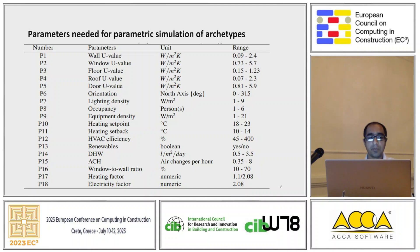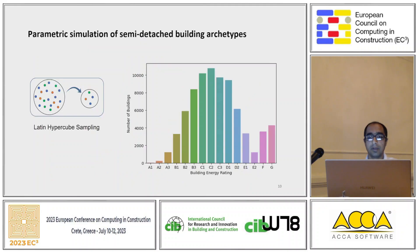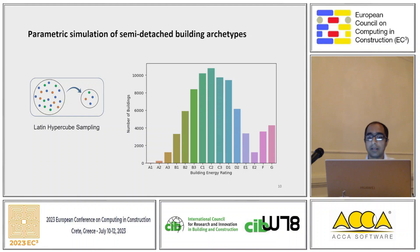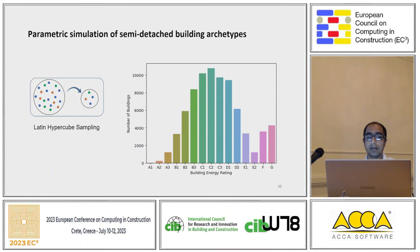Since it is impossible to simulate all combinations of these variables — as that would require trillions of simulations — we used Latin hypercube sampling to generate the dataset. To validate the 75,000 buildings, the energy ratings from A1 to G were examined. The dataset covers all energy rating categories, confirming it is suitable for model training.